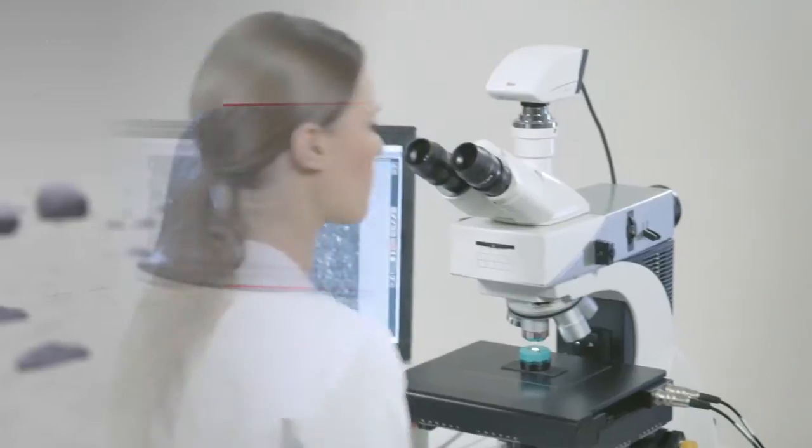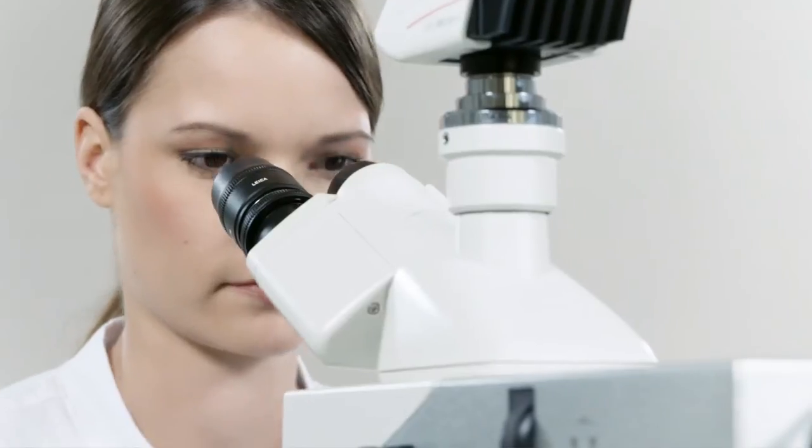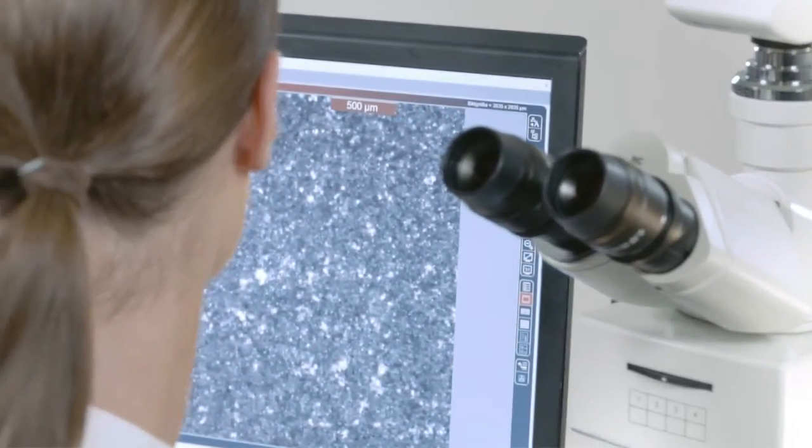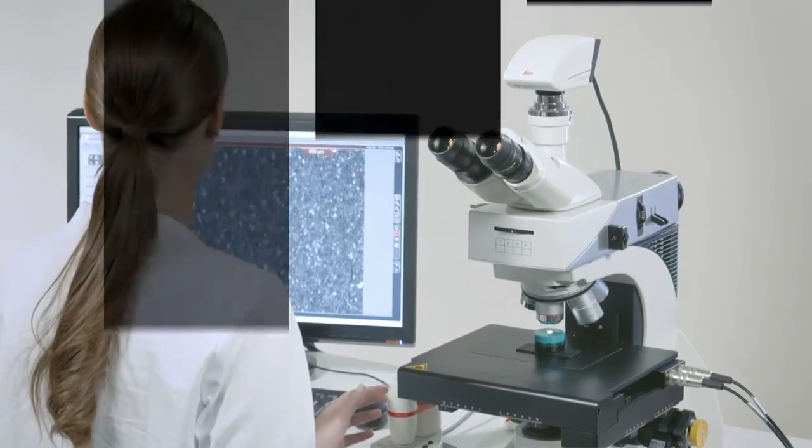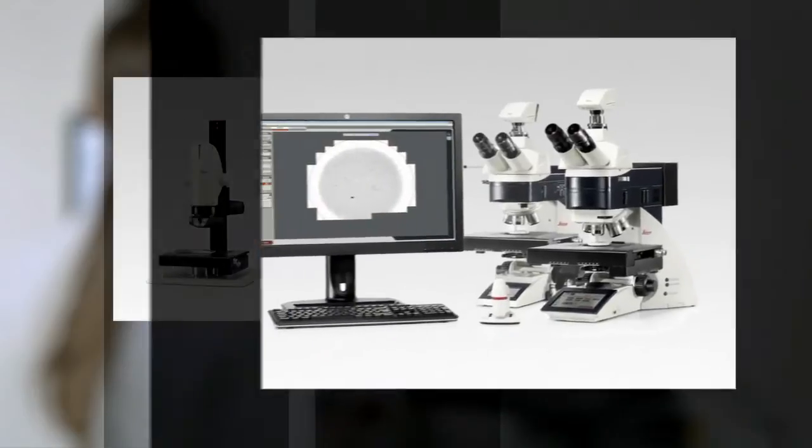Of course, the Leica DM 2700M also delivers all the benefits you would expect from a microscope by Leica Microsystems and is particularly suited for materials testing, for example in metallography. The outstanding accuracy of this microscope is enhanced by full automation.